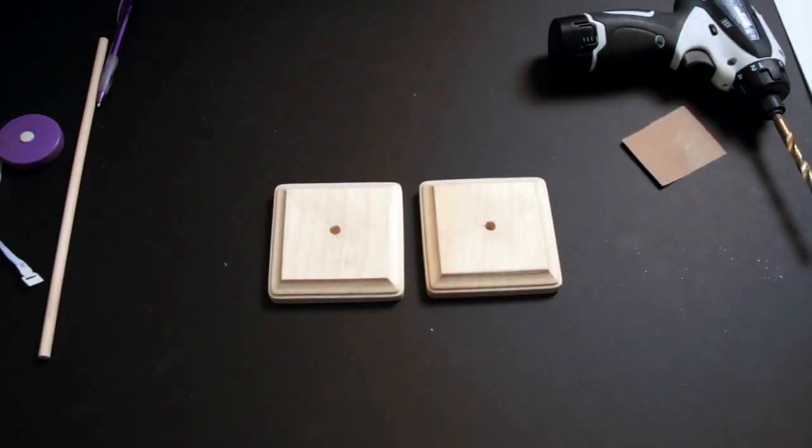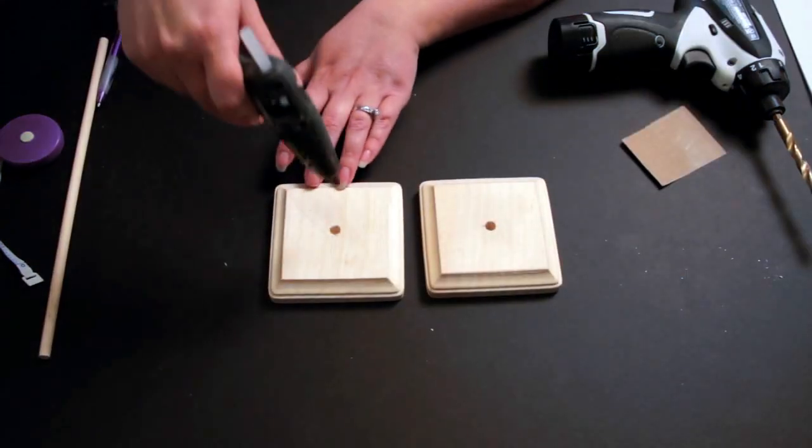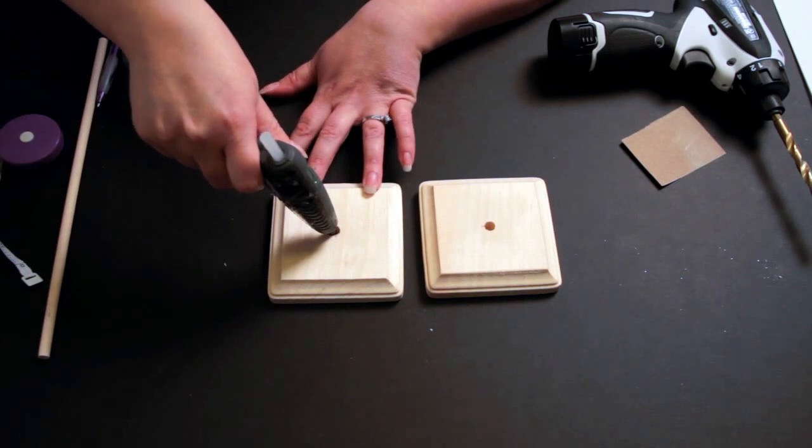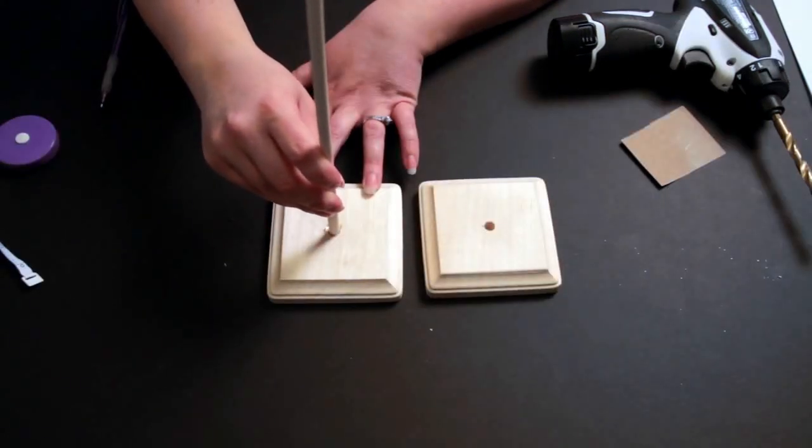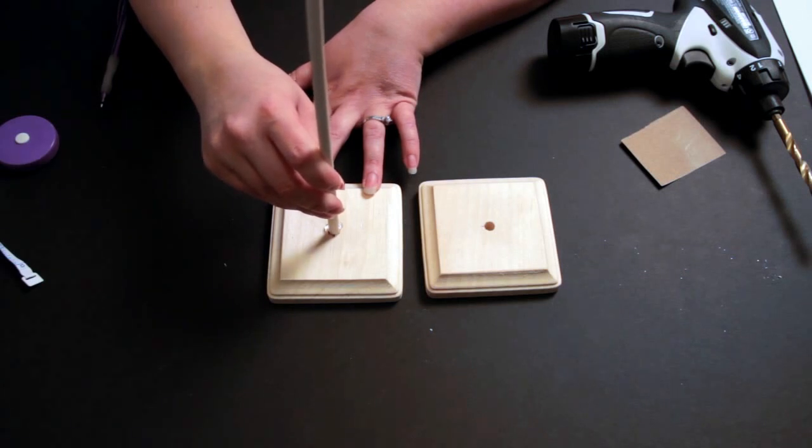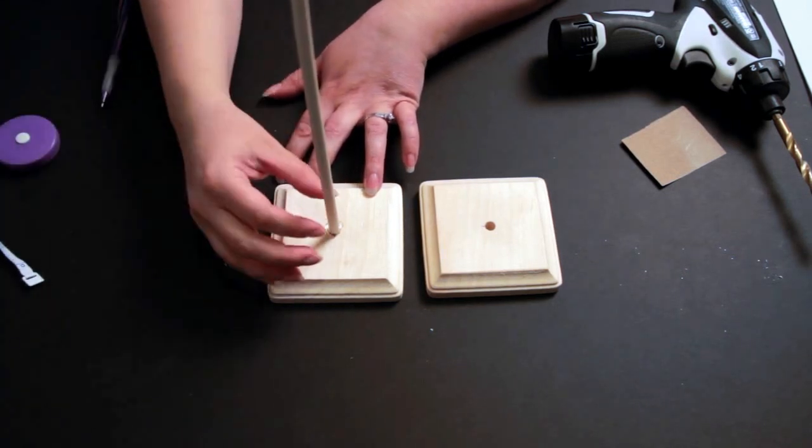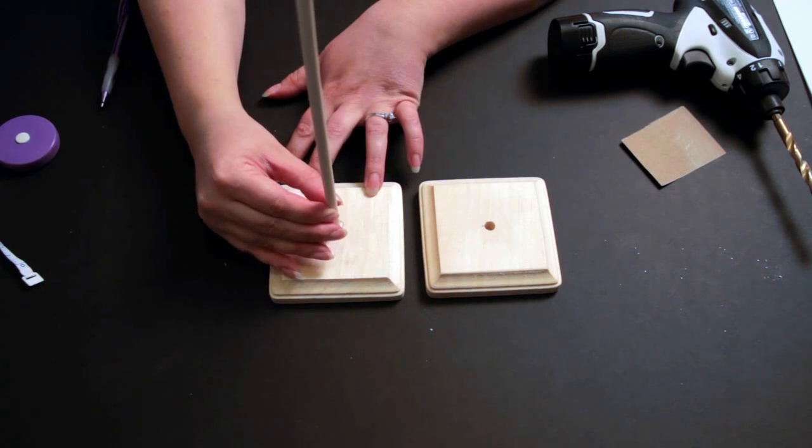Once you have your wood sanded and the holes drilled, you can now glue your dowel into one of the holes on one side. You also want to check your dowel and make sure that it's pretty straight. Some of them, I've noticed, have been really curved and bent. You want to use one that's as straight as possible.